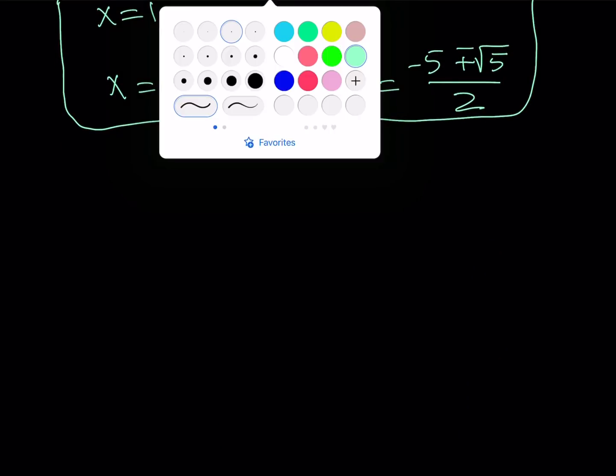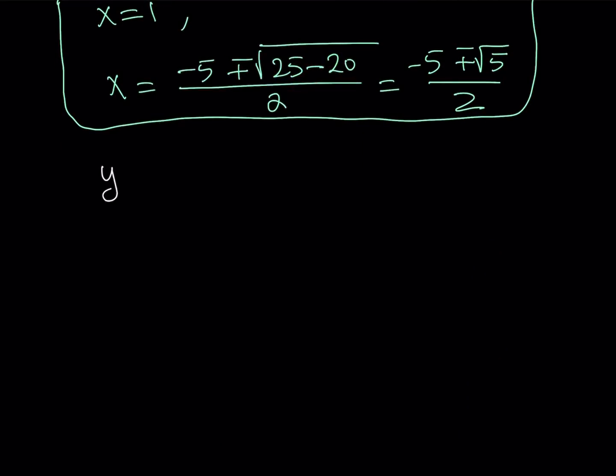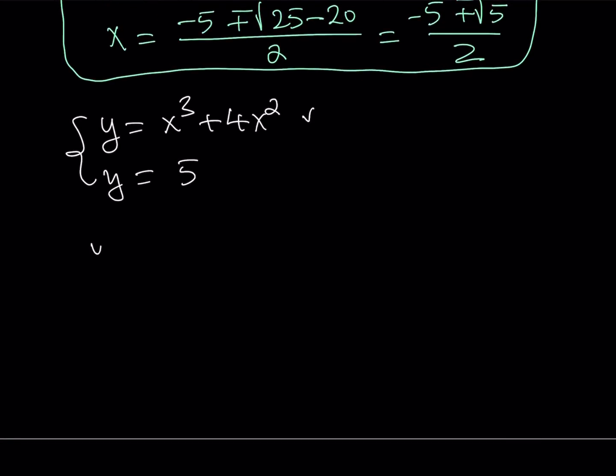So I'm going to consider two functions here. First function is going to be y equals x cubed plus 4x squared. And the other function is going to be y equals 5. So I'm basically looking for the intersection point for these two graphs. Now, why did I separate them like this? Because initially they were separated. And also, the first function, the cubic, in this format is actually easier to analyze. Because it's factorable. So let's go ahead and factor it. If you take out x squared, you're going to get x plus 4.